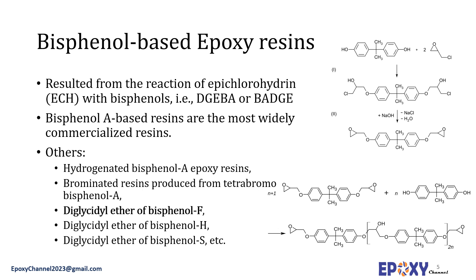Higher molecular weight diglycidyl ethers, with N greater than 1, are formed by the reaction of bisphenol-A diglycidyl ether with further bisphenol-A. This is called pre-polymerization. A product comprising a few repeating units — N equal to 1 to 2, for example — is a viscous clear liquid called a liquid epoxy resin. A product comprising more repeating units — for example N equal to 2 to 13 — is at room temperature a colorless solid, referred to as solid epoxy resin.